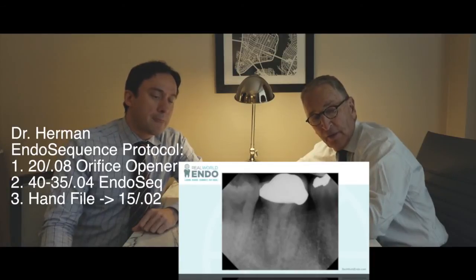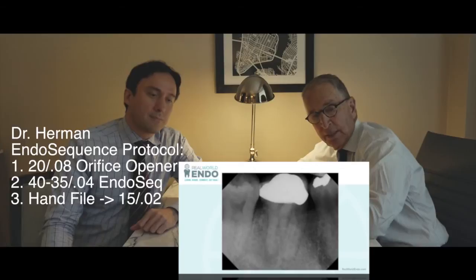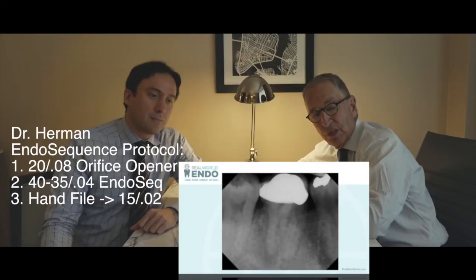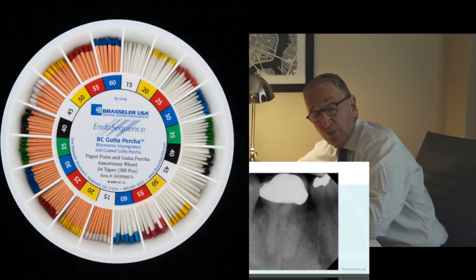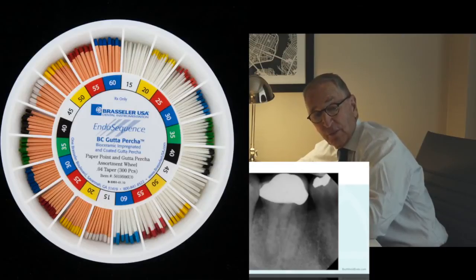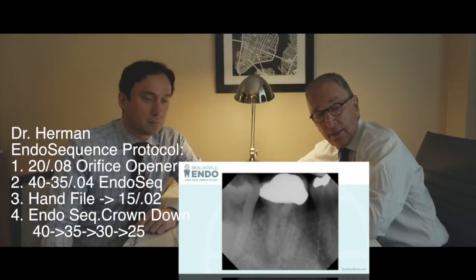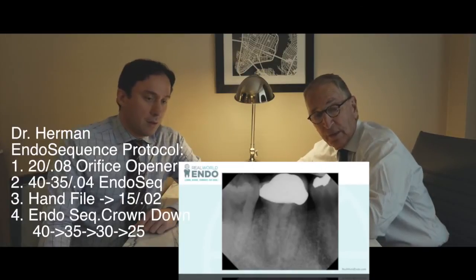So then we go down about halfway, and as I said, we go to hand files. Hand files are not obsolete. I go to at least a 15.02. And then I start my crown-down preparation — 35.04, 30.04. Usually, almost in this case for sure, I got down to a 25.04. And then I fit my gutta-percha point, which is laser-verified to the preparation, and I can absolutely say with certainty that most of the time it will fit perfectly. My gutta-percha points are fitted.